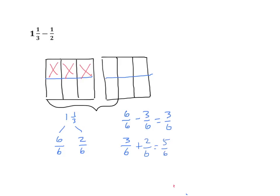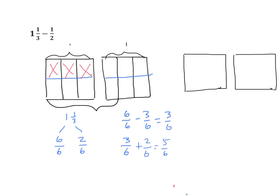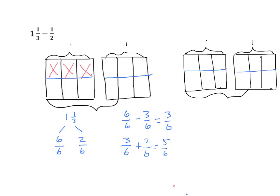We could also do this by taking it from both of these — we're not going to take it from the whole first. In essence, we're going to change our mixed number into an improper fraction. We're going to do basically the same thing. So let's label this one whole. We're going to partition this again, taking our whole and breaking it down into thirds, and account for our subtrahend, 1 half. In this case, we're going to look at our original problem: 1 and 1 third minus 1 half. It's the same as 8 sixths.